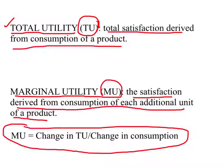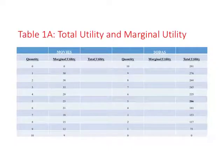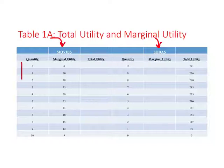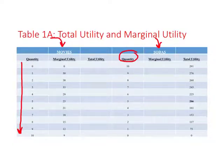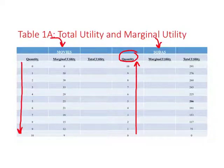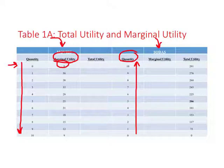Marginal utility is simply the change in total utility divided by the change in consumption. Now we'll look at a specific numerical example of the relationship between marginal and total utility. Consider a hypothetical example where this person purchases only two things: movies and sodas. The quantity of movies increases as we go down the column, and the quantity of sodas increases as we go up the table. This person tells us how much satisfaction they receive from watching each movie — the marginal utility.